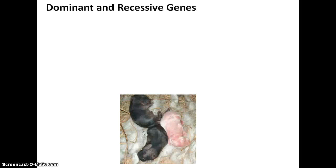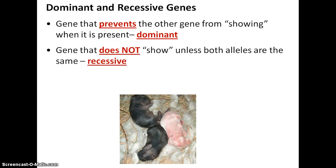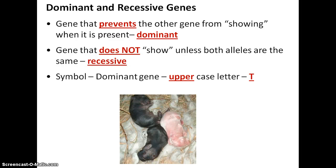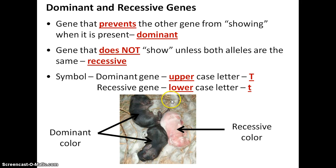Now we come to dominant and recessive genes. A gene that prevents another gene from showing when it's present is said to be dominant — it dominates the expression. The gene that doesn't show unless both alleles (the one from mom and the one from dad) are recessive is called recessive. We use uppercase letters to represent the dominant gene and lowercase for the recessive. In this picture, black fur color is the dominant trait, whereas white would be the recessive trait.